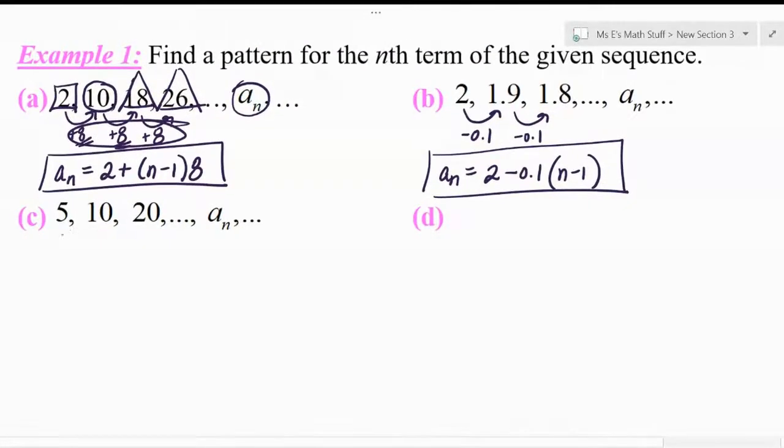Now for part C. If part C was arithmetic, we'd be looking for what they added. And from 5 to 10, they would have added 5. But from 10 to 20, they would have added 10. And right there, that means part C is super-duper not arithmetic and we are best to not treat it like it is.